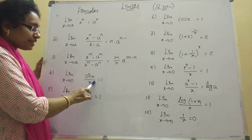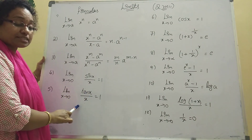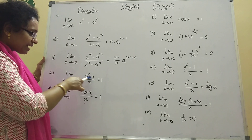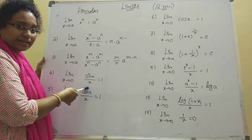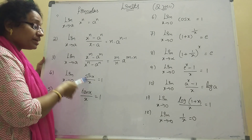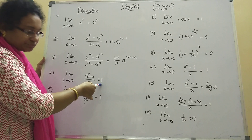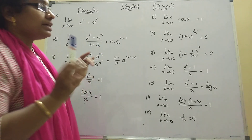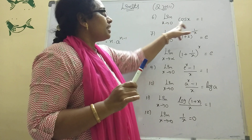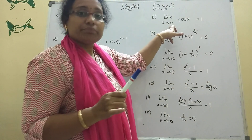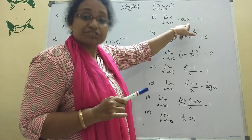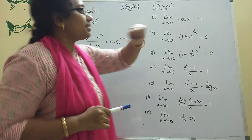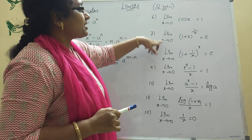You should remember: sin x by x is 1, tan x by x is 1 — because the form is 0 by 0, which in limits gives 1. For cos x, directly apply x equals 0: cos 0 equals 1. So the answer is 1.